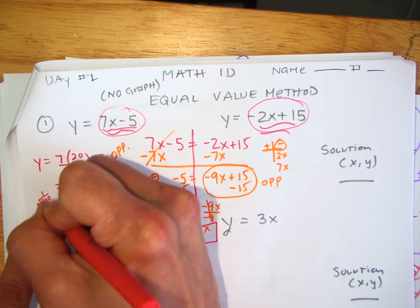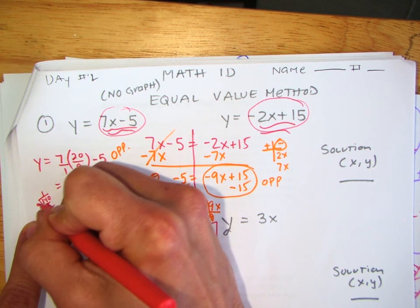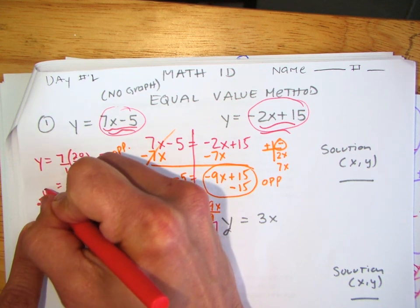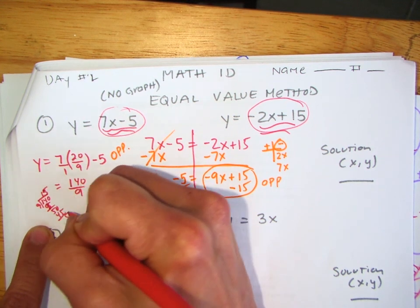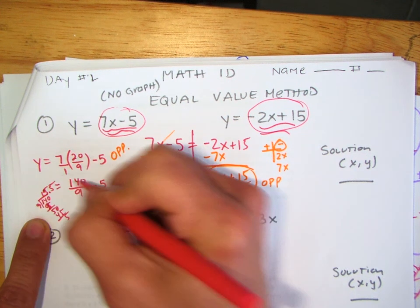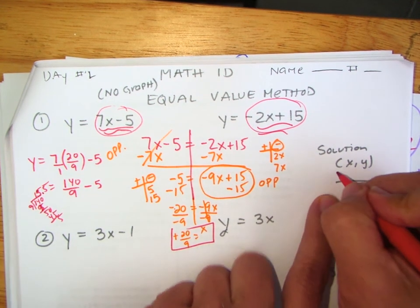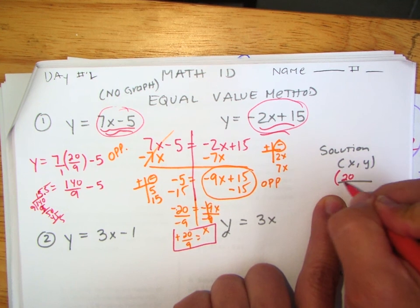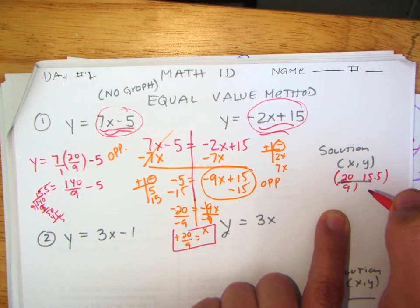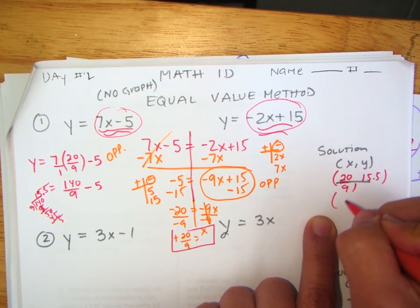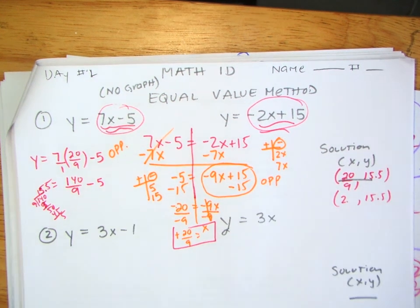So my x is 20 over 9 and y is approximately 15.5. 20 over 9 is about 2-point-something. Use your calculator. So those are your values for this problem.